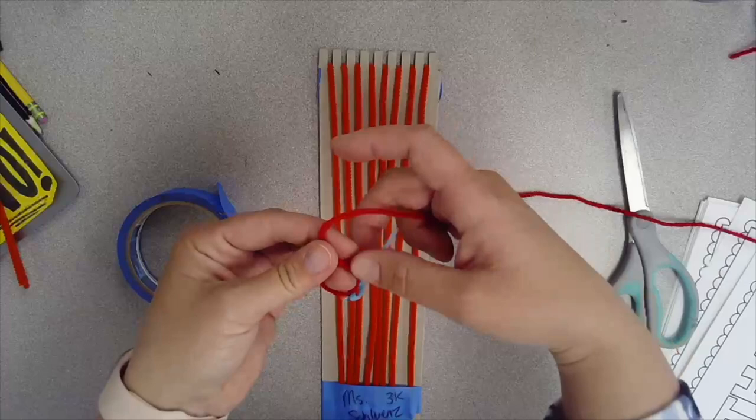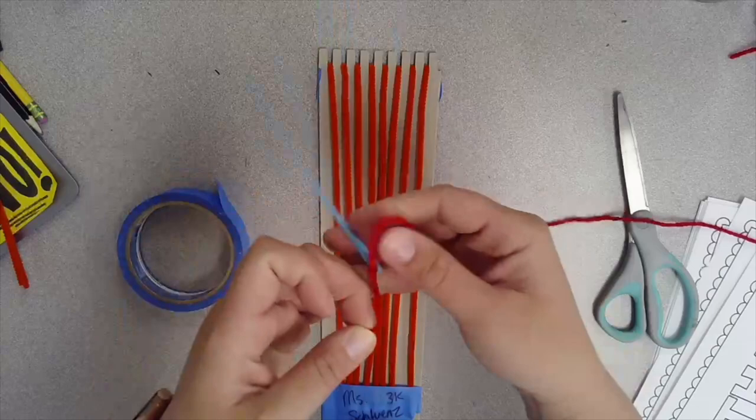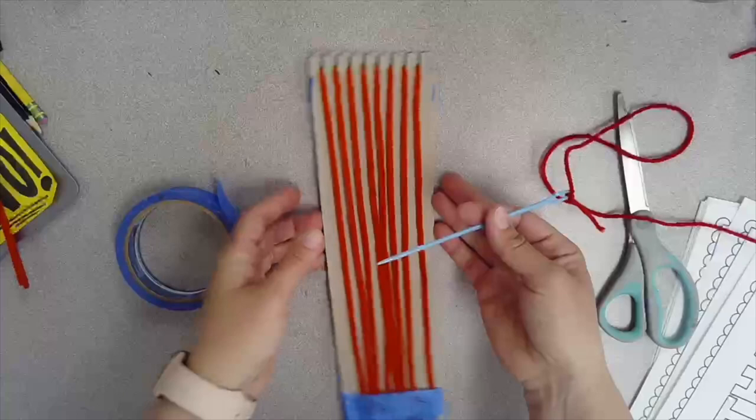I'm going to do that again. Cross it, take the tail, turn it back, and put it through the loop. Pull it tight and your string is now attached to your needle, but make sure you tie it twice.